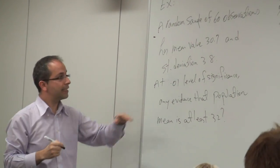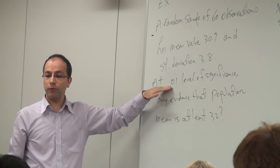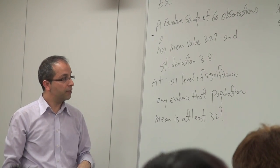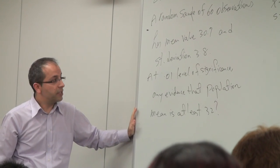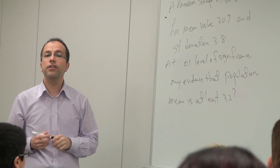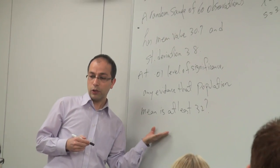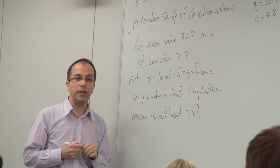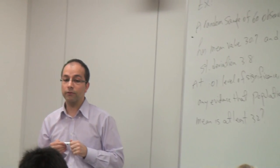At this 0.01 level of significance, we want to see if there is any evidence that population mean μ is at least 32. We need to conduct this hypothesis test. The first step is to write down H₀ and Hₐ.